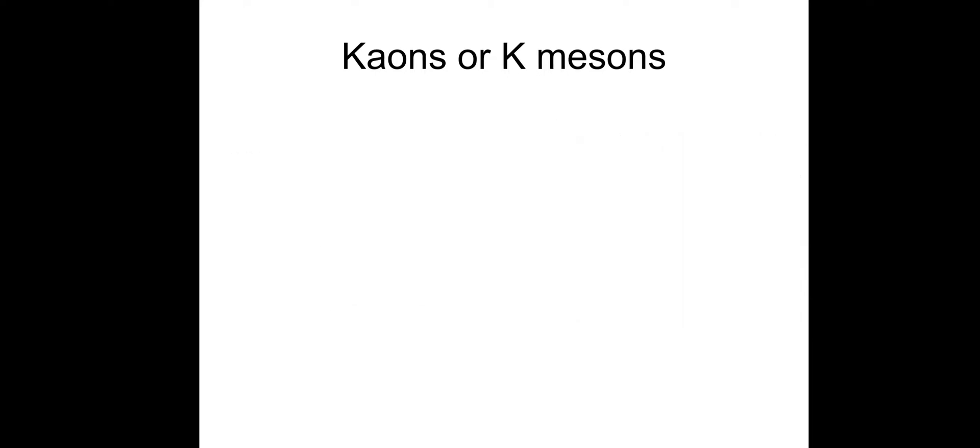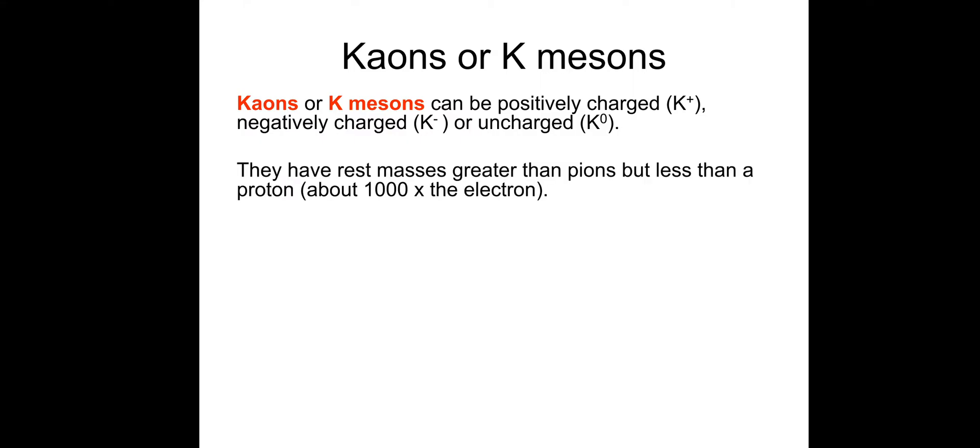K-ons or K-mesons can be positively charged (K plus), negatively charged (K minus), or uncharged (K naught). They have rest masses greater than Pions but less than a proton, about a thousand times the mass of an electron. They're all unstable, they decay by the weak interaction, and they decay far more slowly than Pions.